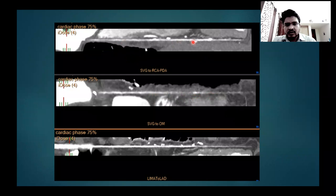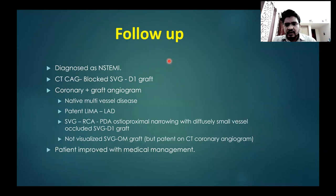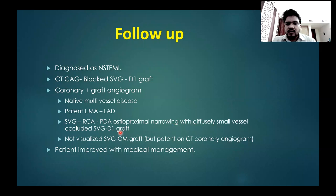For SVG to RCA, there was narrowing at the anastomosis as well, but faint contrast opacification was maintained. Straight axis views confirmed the findings. On follow-up, the patient was diagnosed with non-STEMI. CT coronary angio showed a blocked SVG to D1 graft. Invasive coronary angiogram showed native multivessel disease, patent LIMA to LAD, SVG to RCA PDA ostio-proximal narrowing with diffuse small vessel, and occluded SVG to D1 graft. Invasive angio was not able to visualize the SVG to OM graft, but it was patent on CT coronary angio. The patient improved with medical management.